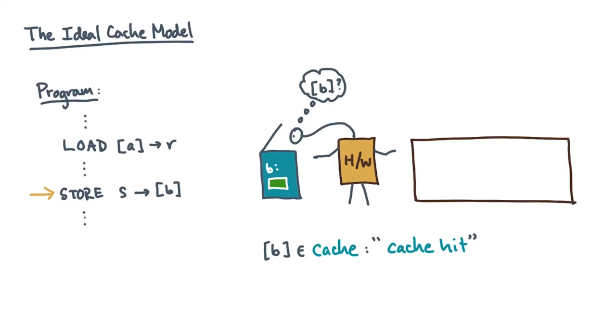Otherwise, there's no copy of B in the cache, and it's a cache miss. The hardware would load the block from slow memory into cache. In other words, a store miss, like a load miss, causes a memory transfer. Okay, so those were the basics of load and store operations.